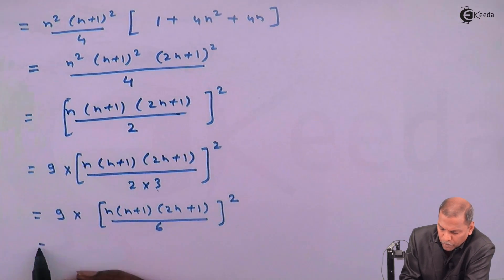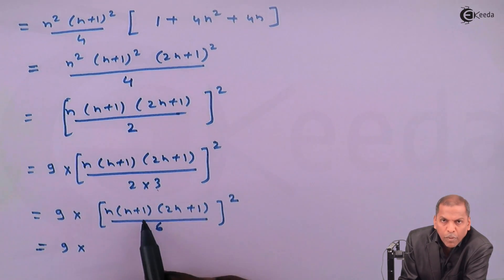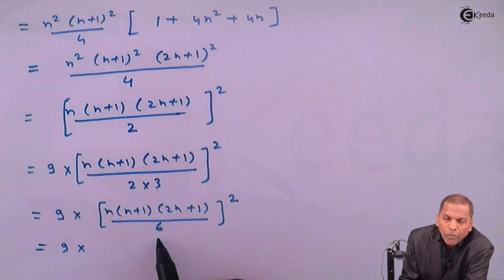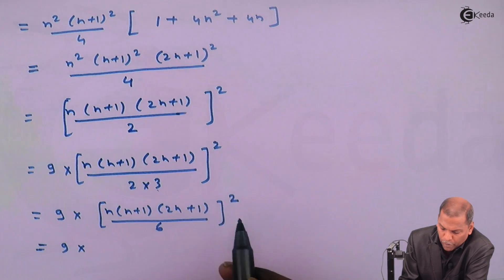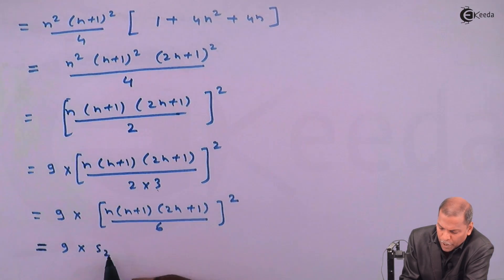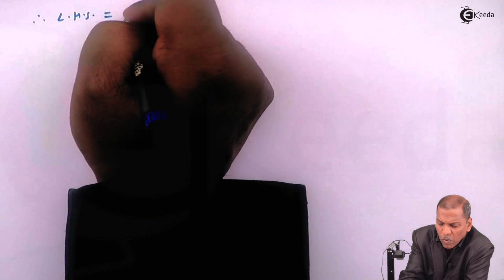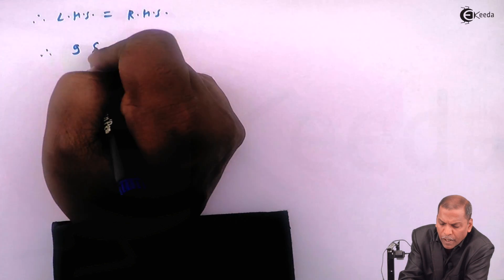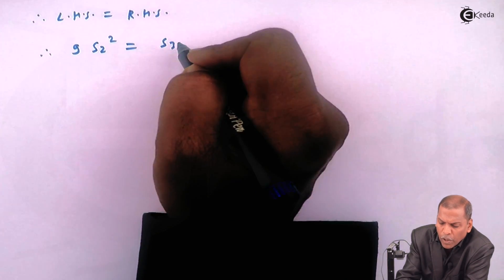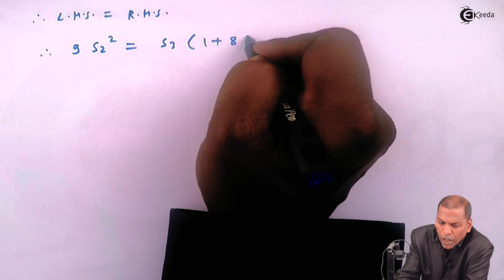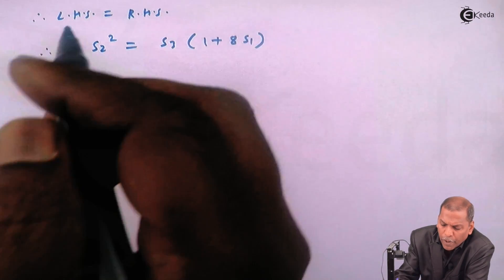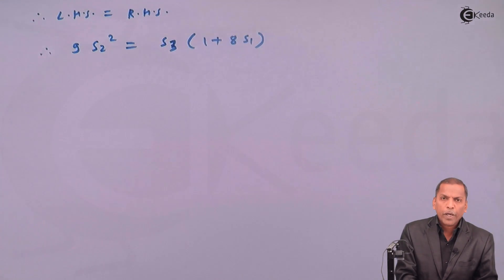By using Theorem 2 we recognise that n(n+1)(2n+1)/6 = S2, so the expression equals 9·(S2)², which is exactly the left-hand side. Therefore we have proved that LHS = RHS, and hence 9·(S2)² = S3·(1 + 8S1). This is the required solution of the given problem. Thank you.